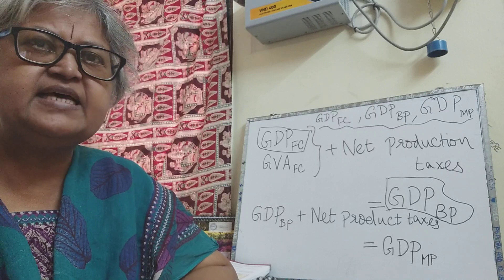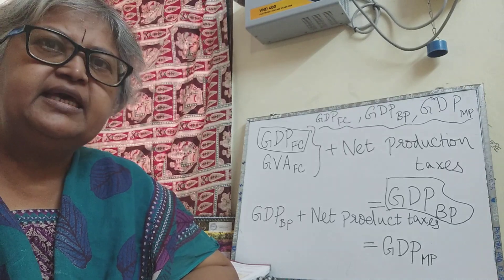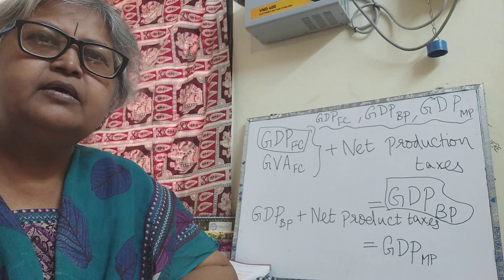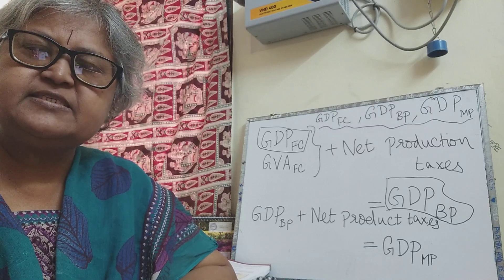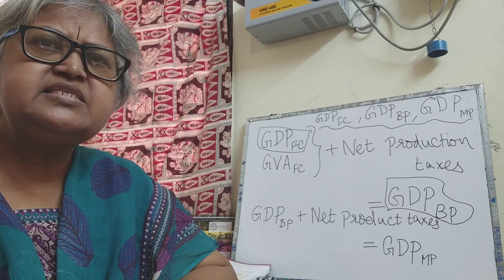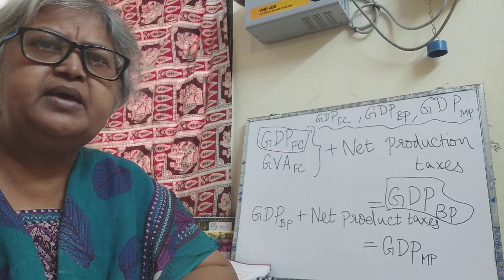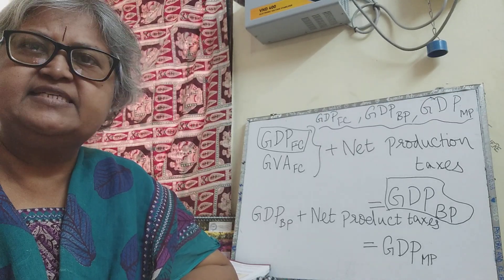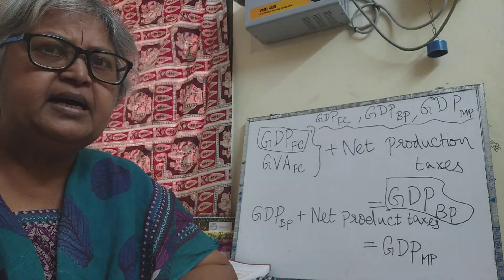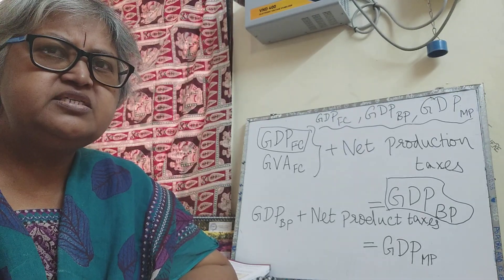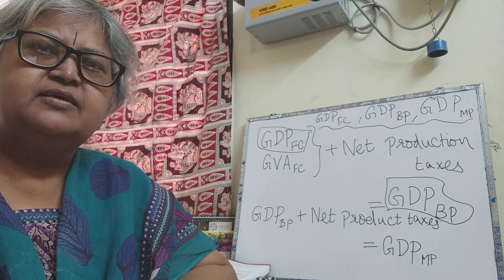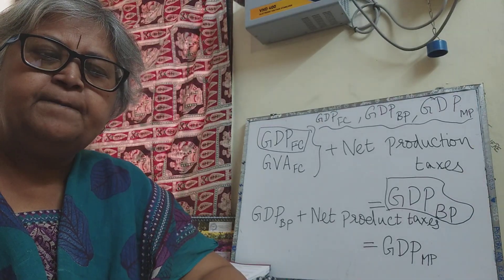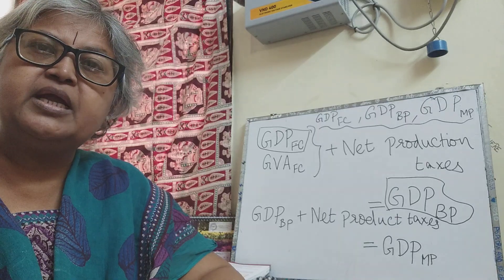It was not tested in the board examination 2019-2020, but it is very much part of the curriculum. So let's discuss this aggregate - the gross domestic product at basic price. GDPFC plus NIT gives GDPMP, which you are already aware of. GDP at basic price is nothing but GDPFC plus the net production taxes. So what is this term net production taxes?